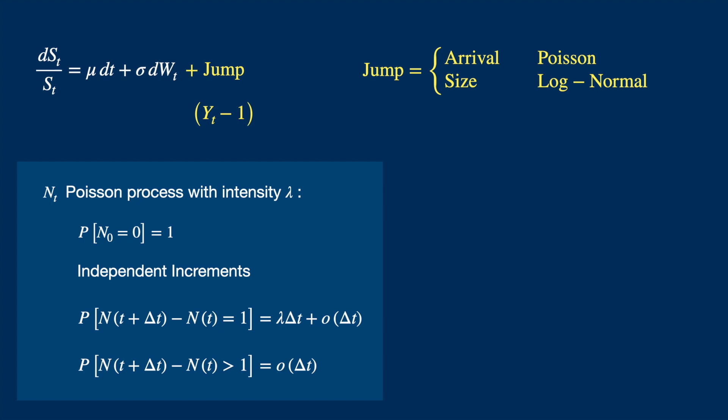So N underscore t is the counter of jumps. dN, which is like the change in the counter over a small interval, will take a value of 1, with probability lambda times dt, or 0 with the remaining probability. So we can multiply the jump size by dN.